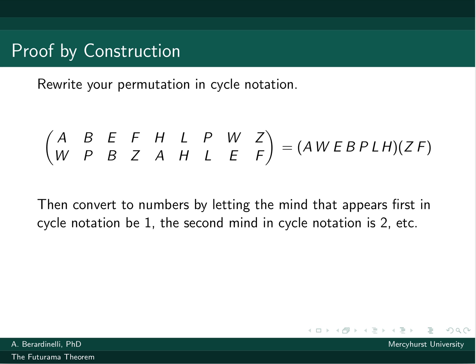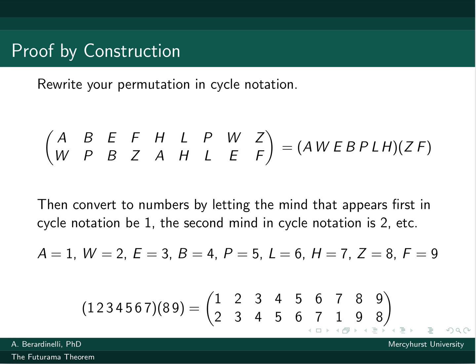Now we're going to do that abstraction that we talked about yesterday of using numbers instead. So I'll look at each cycle and number accordingly. So A is going to be 1, W is going to be 2, E is going to be 3, the whole way across. Just the order that they're written in cycle notation, that's the number order I'm going to give them.